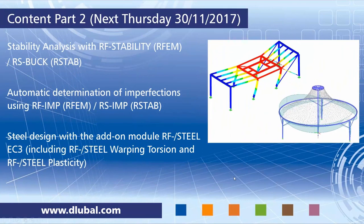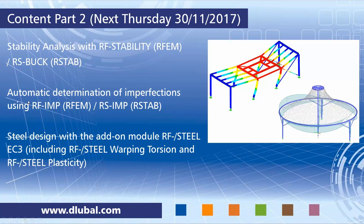Next week we go ahead with the same structure and will perform a stability analysis using the RS-Buckling add-on module for R-STAB and RF-Stability for RFEM. I will show a different ready-made model. We will manually create imperfections and automatically determine them using RF-IMP, and finally use the RF-Steel EC3 / Eurocode 3 module — including warping torsion and plasticity analyzers — to perform a complete steel design for the platform modeled today.